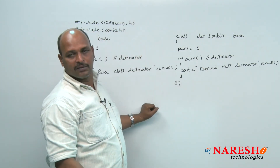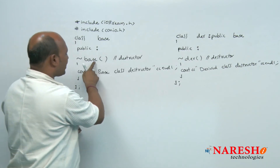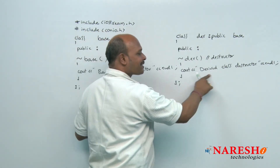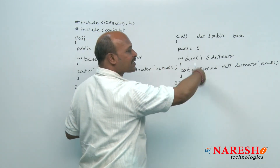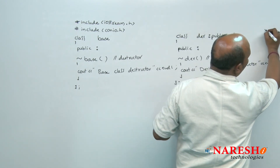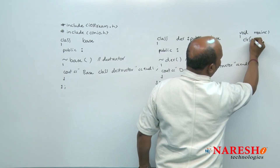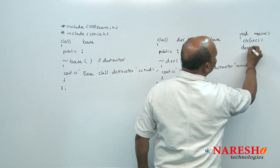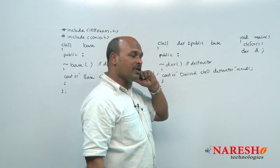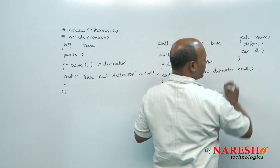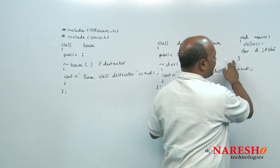Now we have two classes. When this derived class object is created, automatically the base class destructor will become the last line of the derived class destructor. In main function — clrscr is first as a common thing — now derived D is the object of derived class. Next, close the bracket. When the block is going to close, the destructor of derived class starts working.